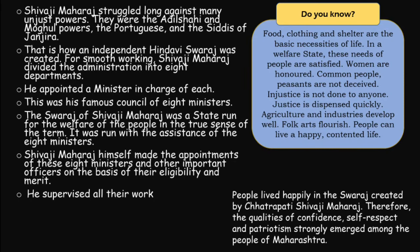Shivaji Maharaj struggled long against many unjust powers: the Adilshai and the Mughals, the Portuguese, and the Siddis of Janjira. That is how an independent Hindu Swaraj was created. For smooth working, Shivaji Maharaj divided the administration into eight departments and appointed a minister in charge of each. This was his famous council of eight ministers.